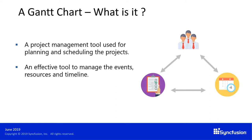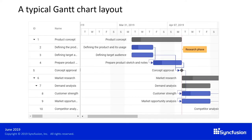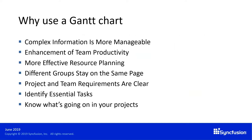A Gantt chart is a project management tool used for planning and scheduling projects. Instead of the old-school way of using Excel to manage your projects, Gantt chart is an effective tool. It helps you manage events, resources, and timeline under one roof. A typical Gantt chart layout has the task tree on the left side and a timeline view on the right side.